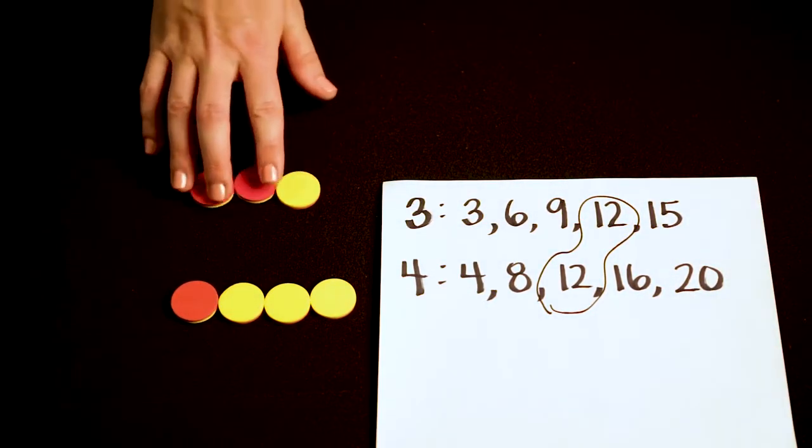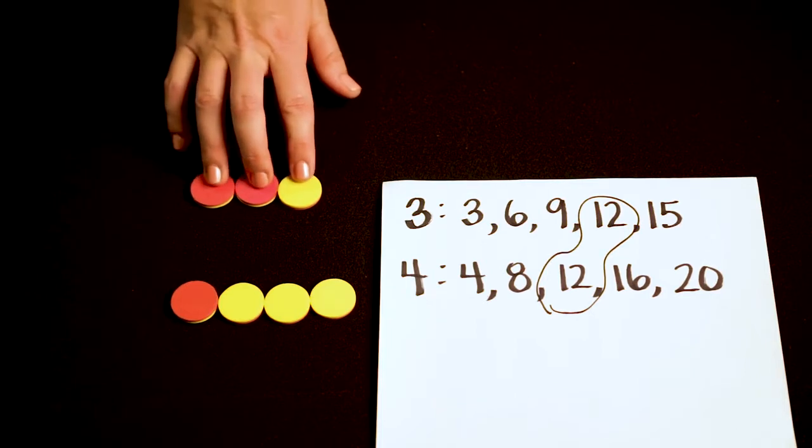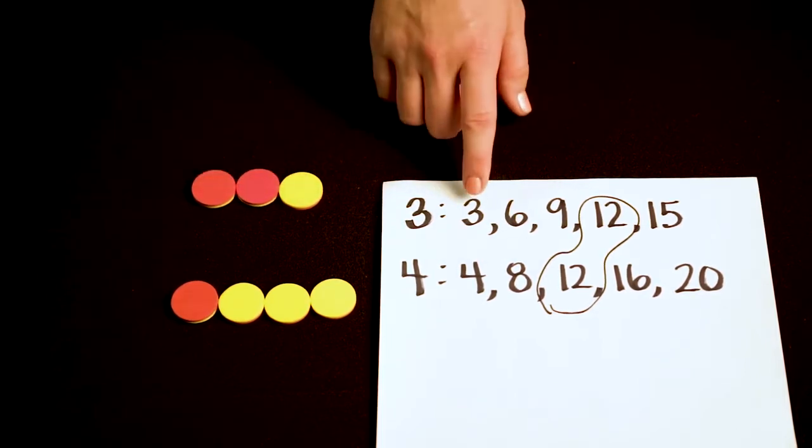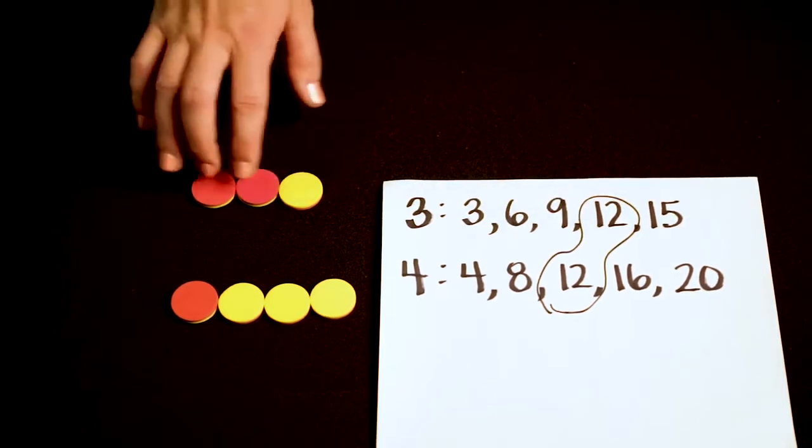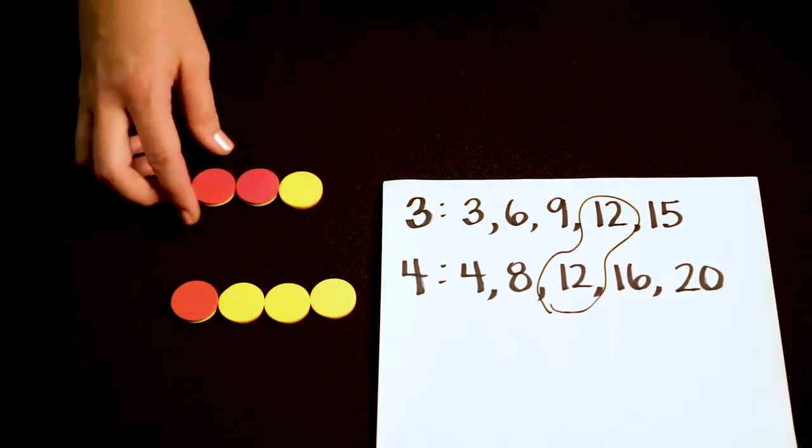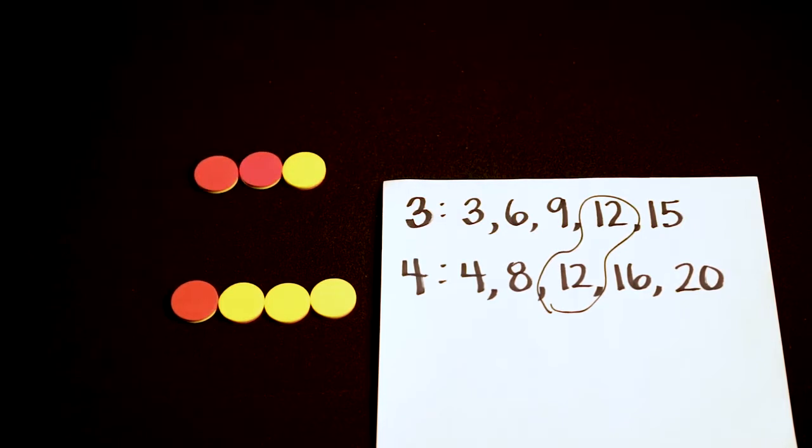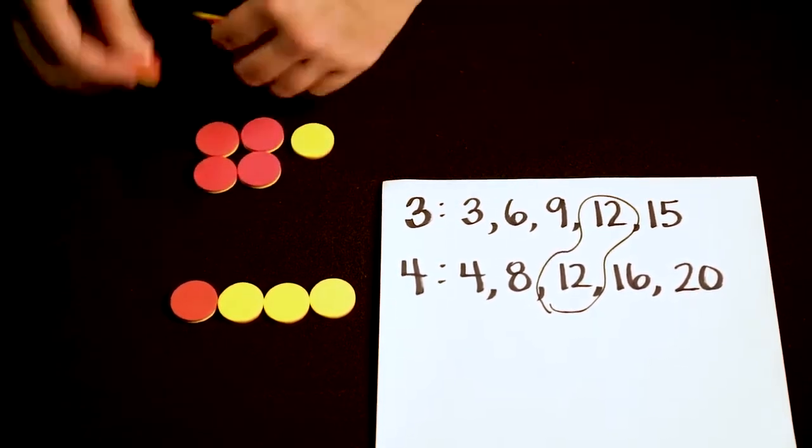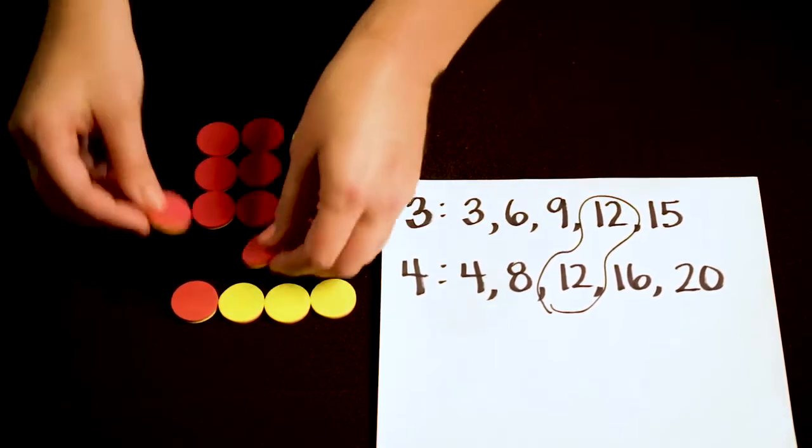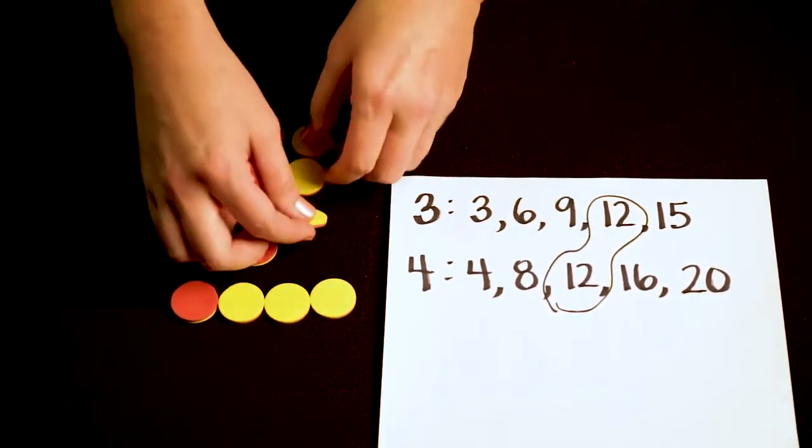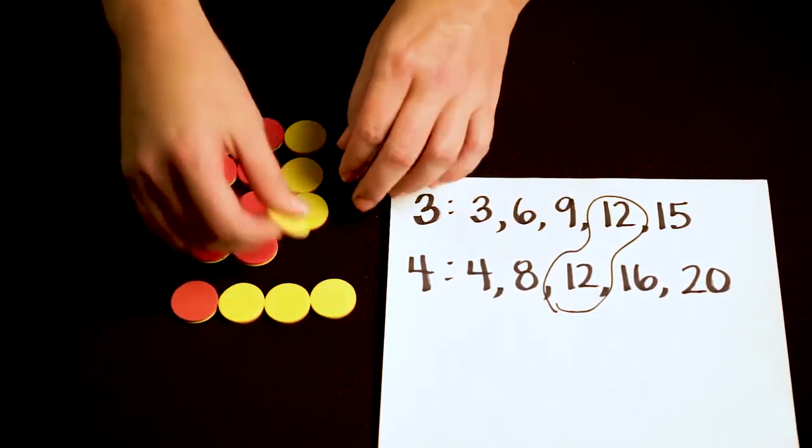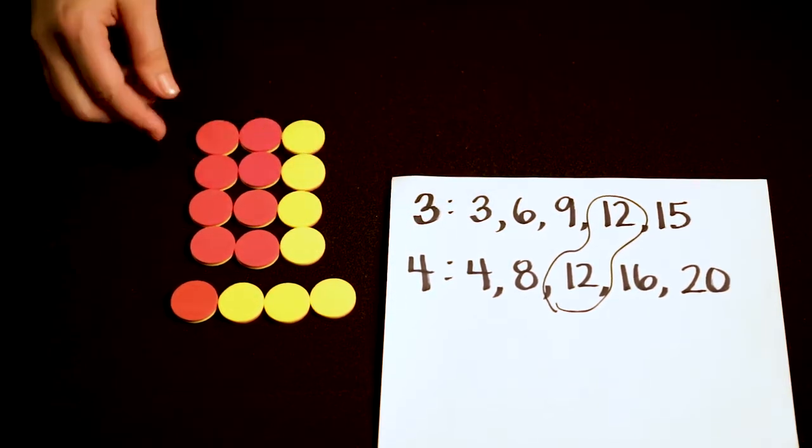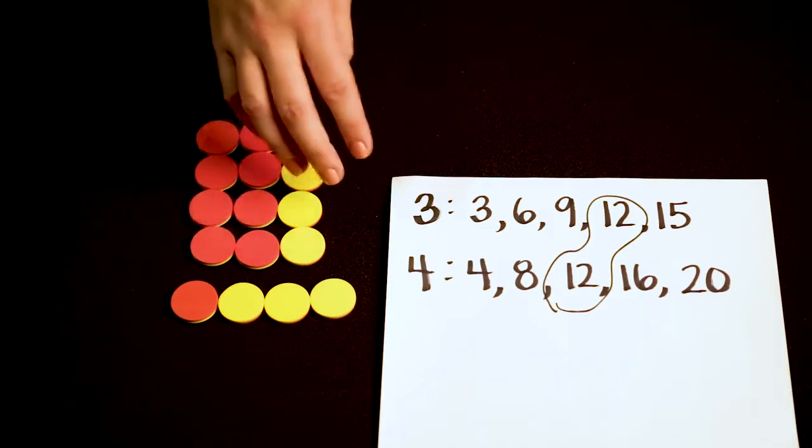So that means I'm going to take this fraction with a denominator of 3 and I'm going to iterate it or copy it and I need to make 1, 2, 3, 4 sets of this fraction with a denominator of 3. That means I'm going to multiply the numerator times 4, so I'll go ahead and do that now with my color counters, and the denominator by 4. So here I can see that 2 thirds is equivalent to 8 twelfths.